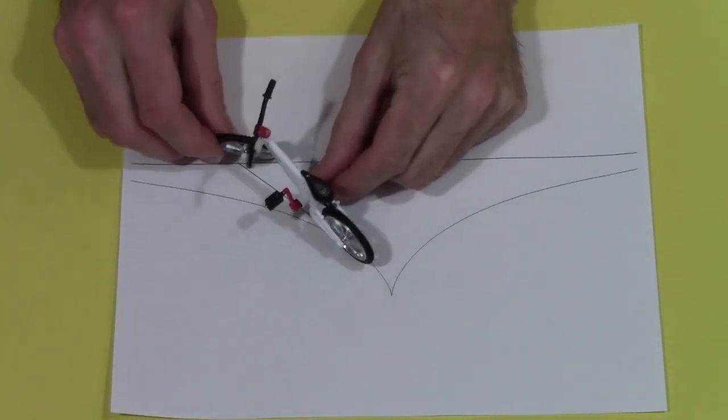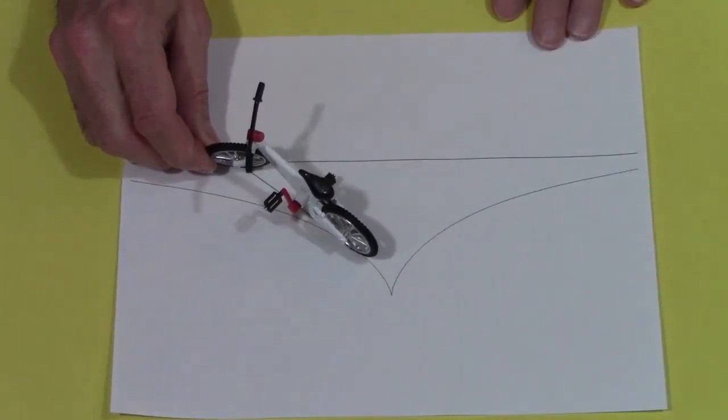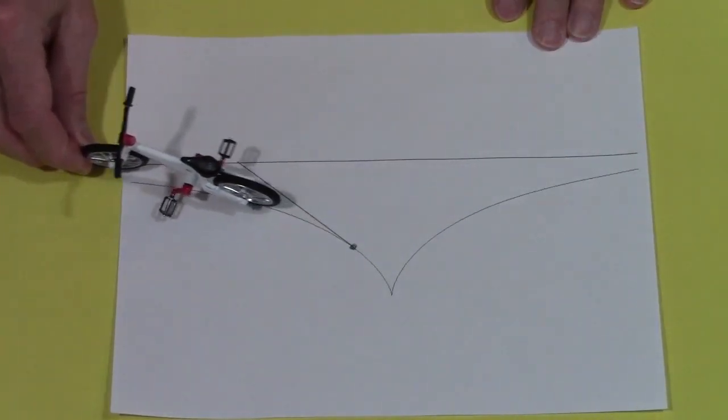A bike moves in the same way because the motion of the back wheel is always aimed towards the position of the front, a fixed distance away.